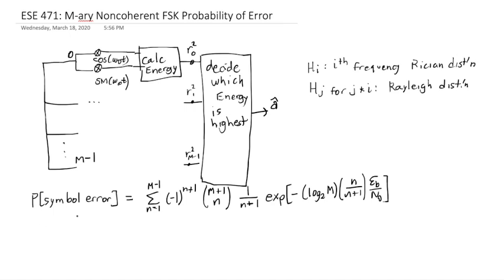Now, this is the probability of symbol error, and there are log base 2 M bits per symbol.